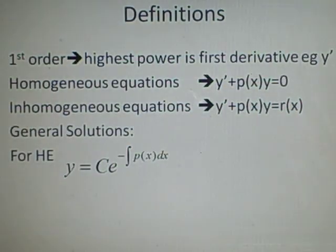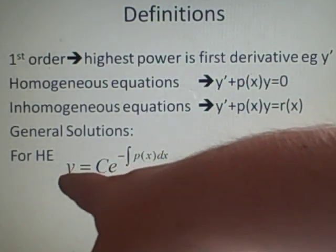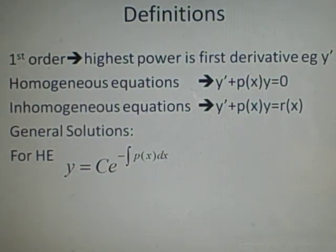Right, now, to find the general solution for a homogeneous equation, which is one of these, we have this formula here, which is y equals c times e to the minus integral of p of x dx, so the p of x from here.